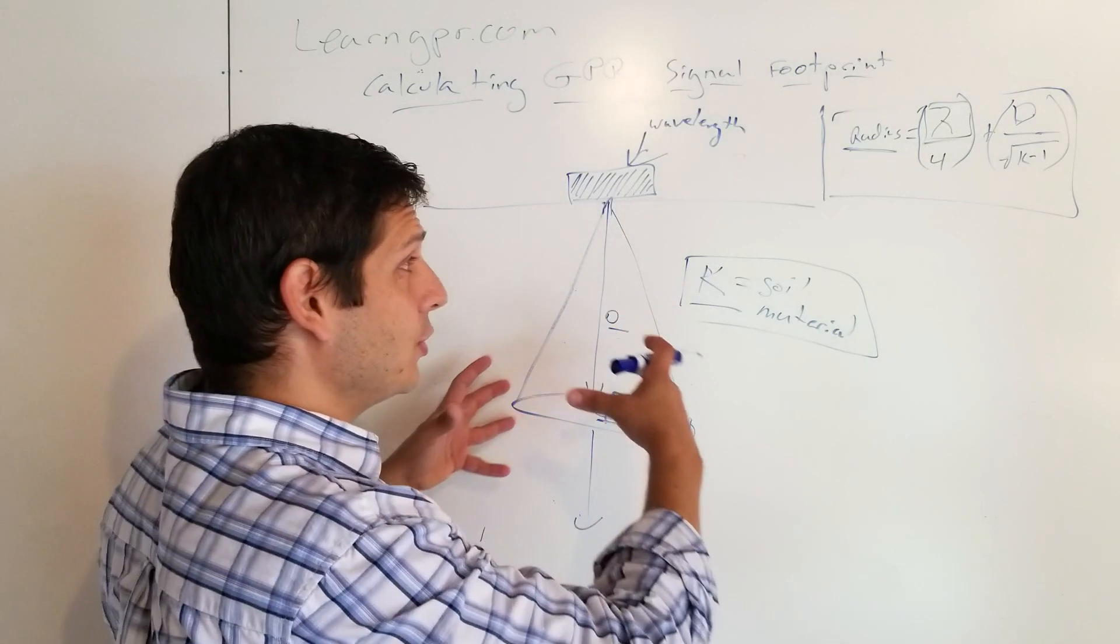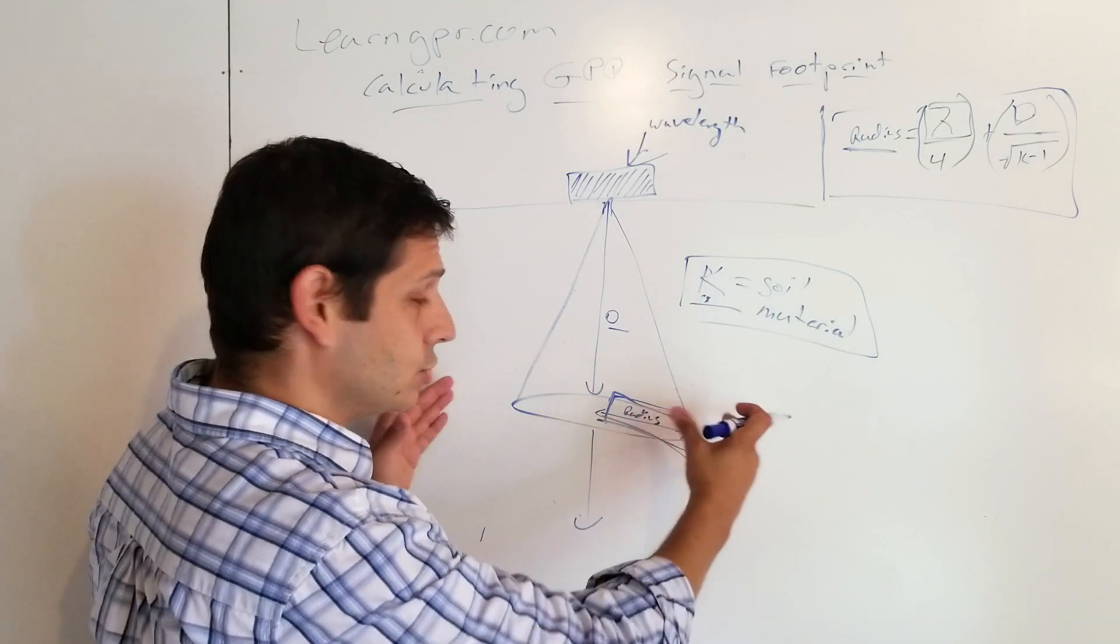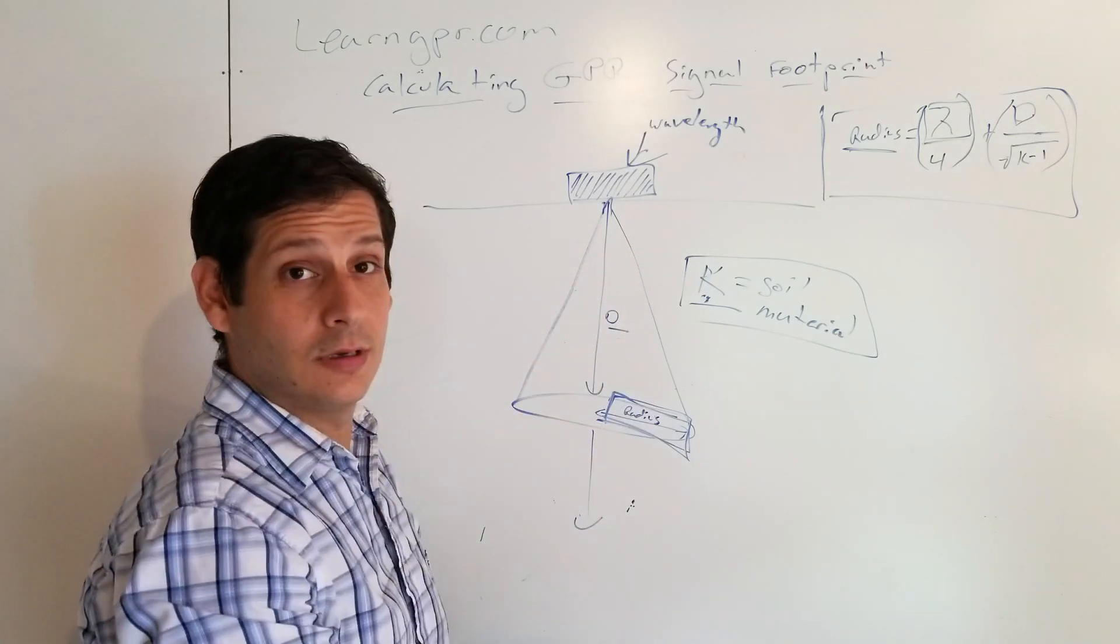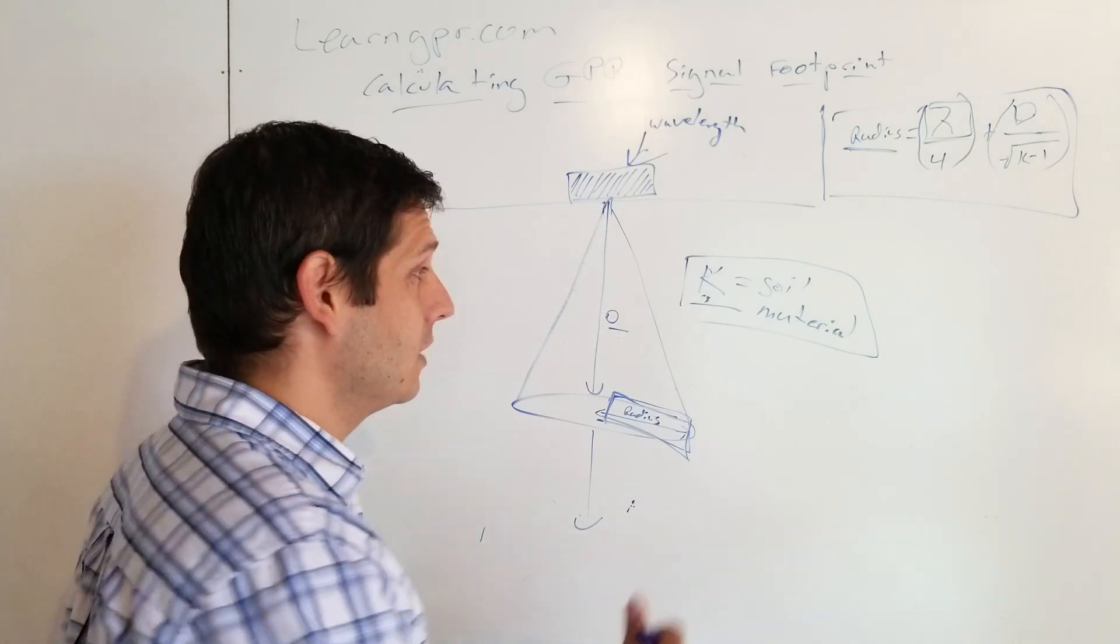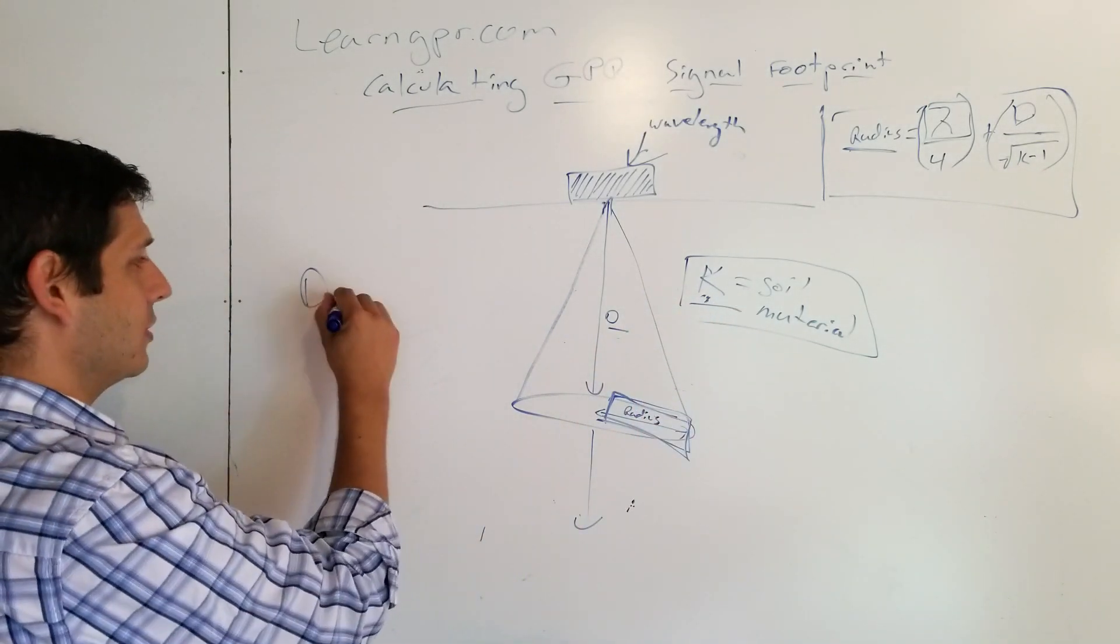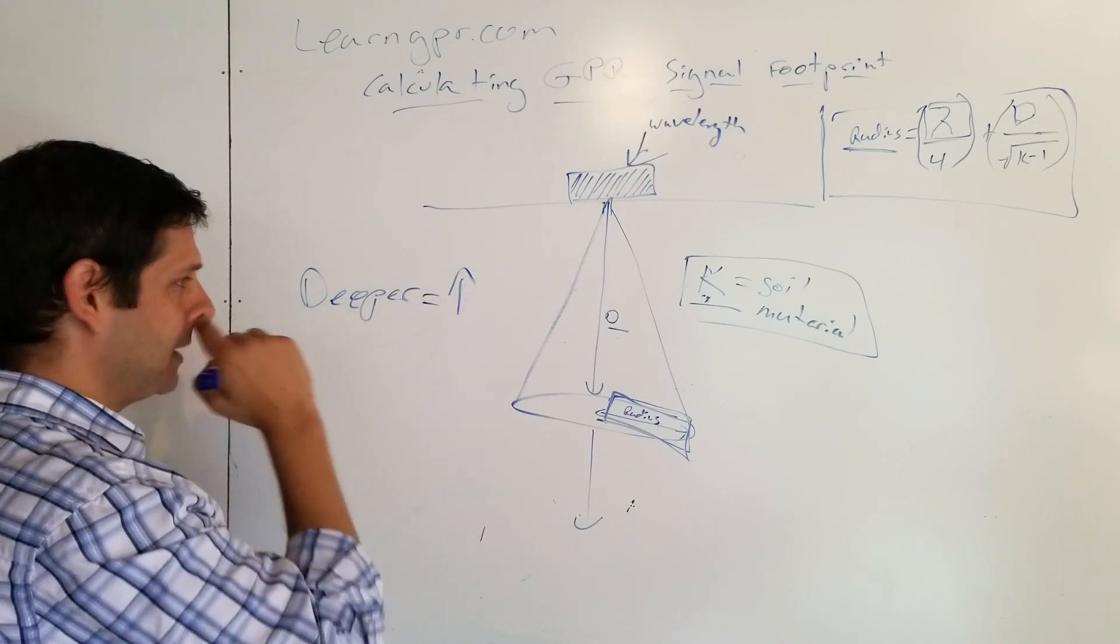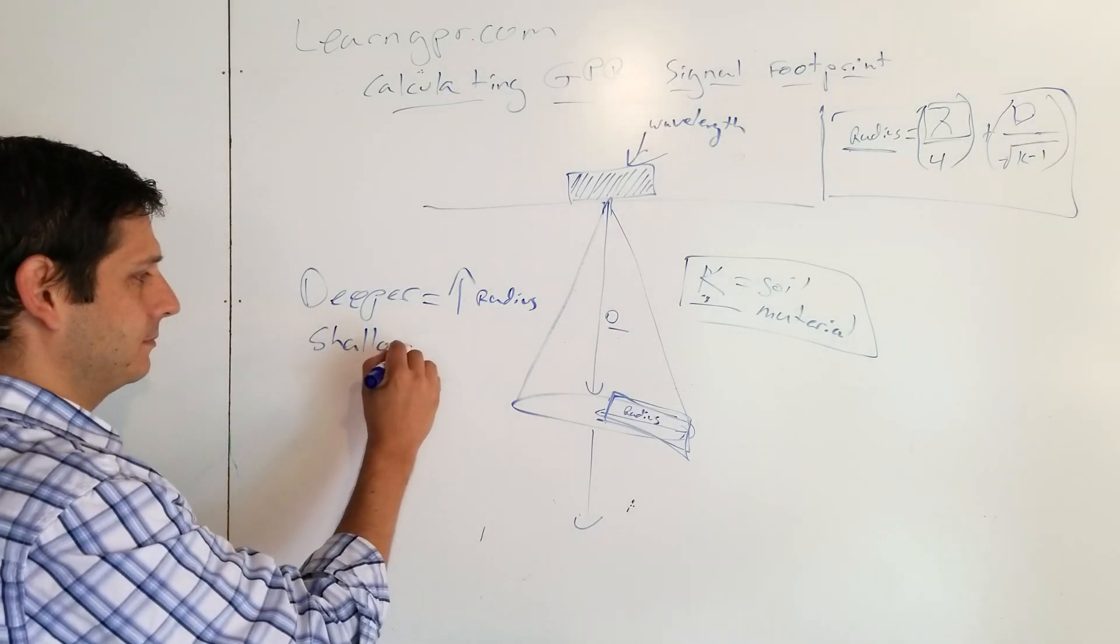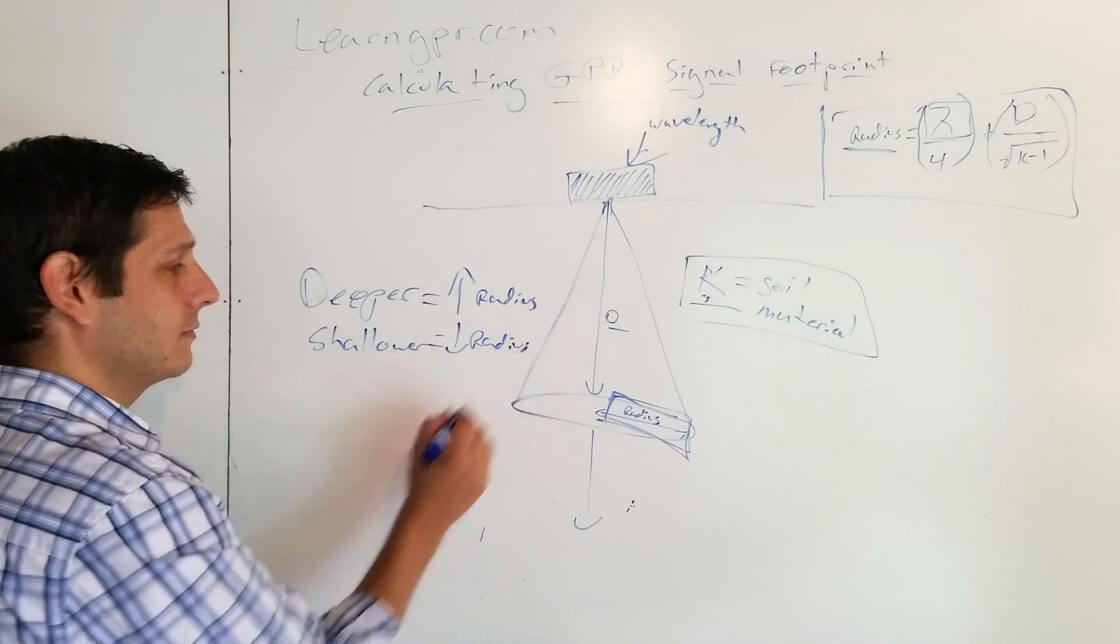So the deeper you go for any given permittivity, the larger this radius will be. The shallower you go, the smaller the radius is going to be. So also has another effect, which is, I wrote that out. So deeper equals increase in radius by shallower is decrease in radius.